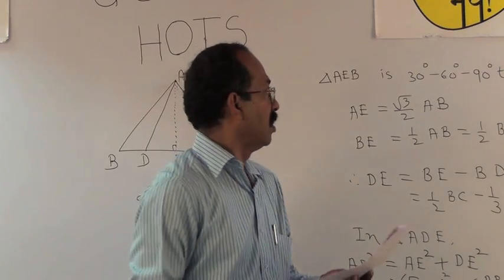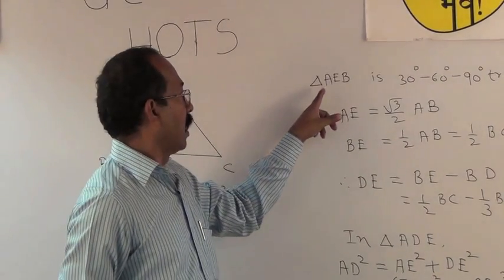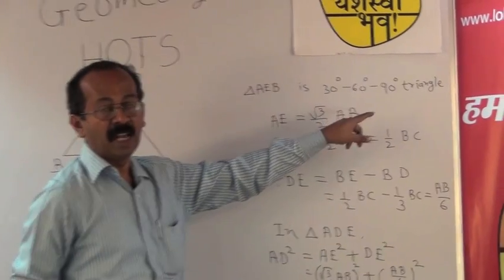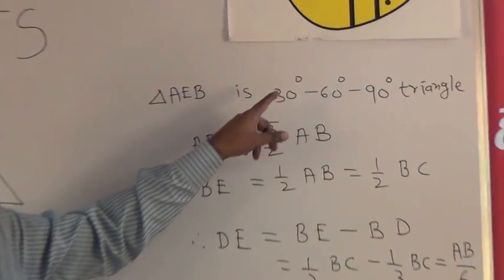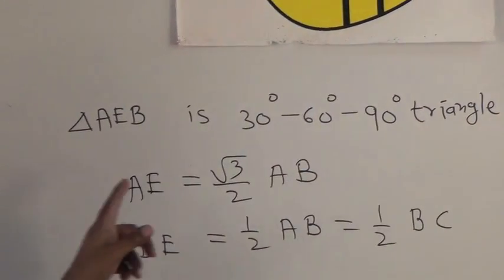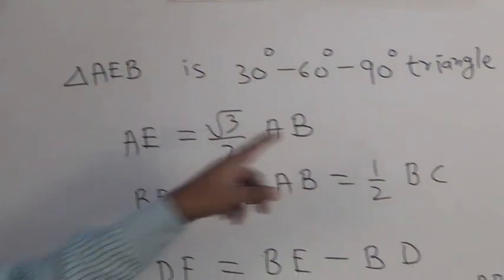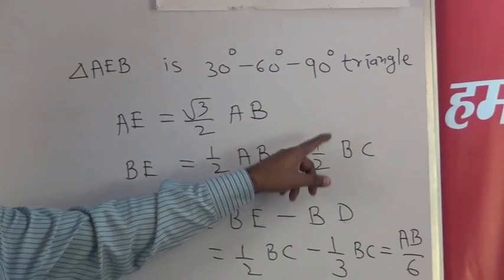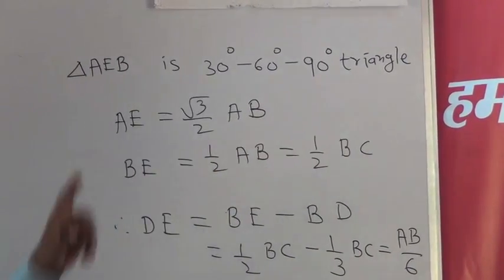While solving this sum, we have to prove that triangle AEB is 30, 60, 90 triangle. So applying the theorem on 30, 60, 90 triangle, we get AE = (√3/2)AB and BE = (1/2)AB, that is equal to (1/2)BC, because AB = BC.